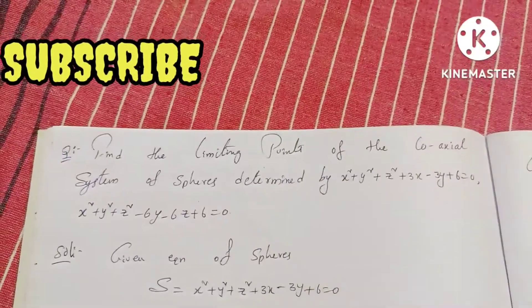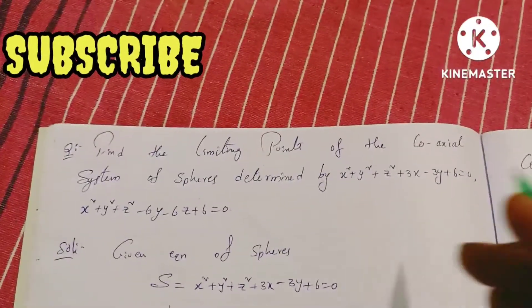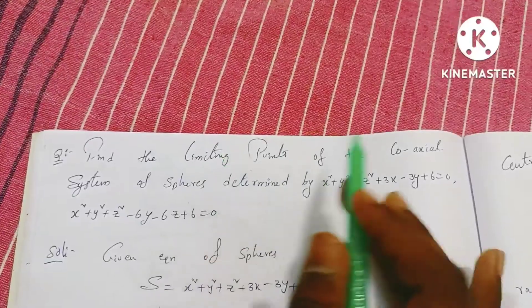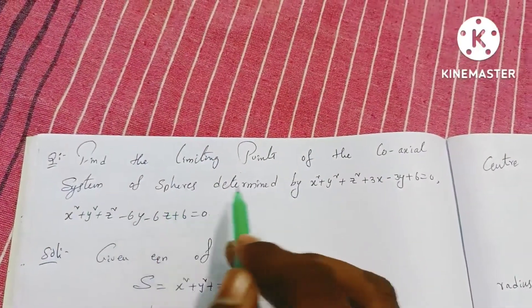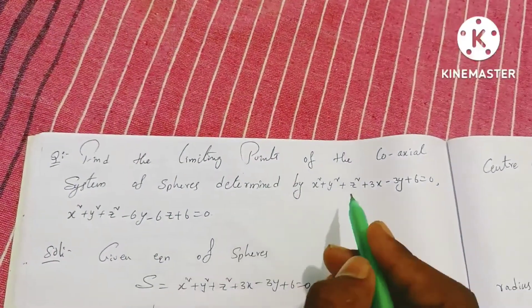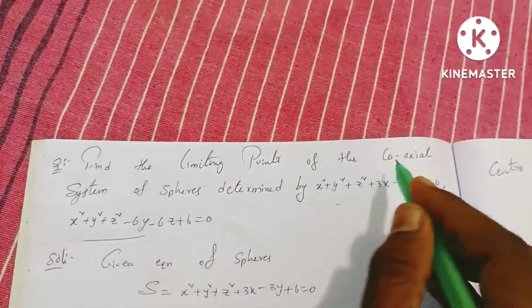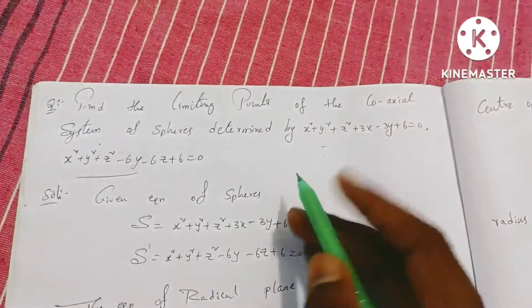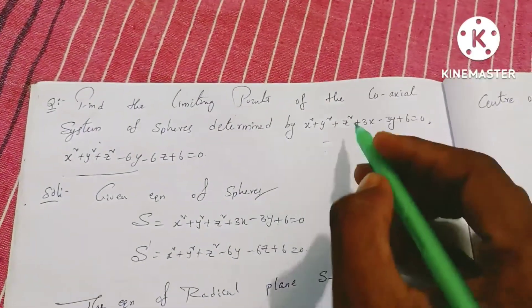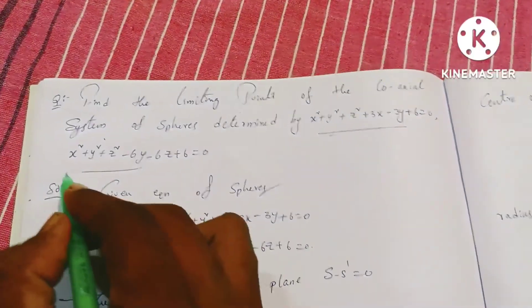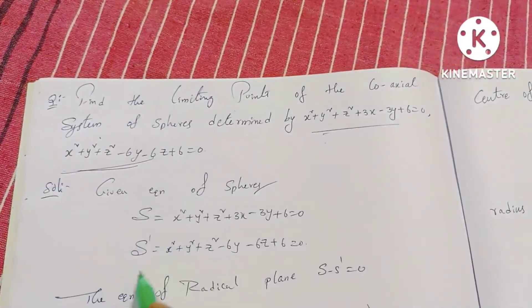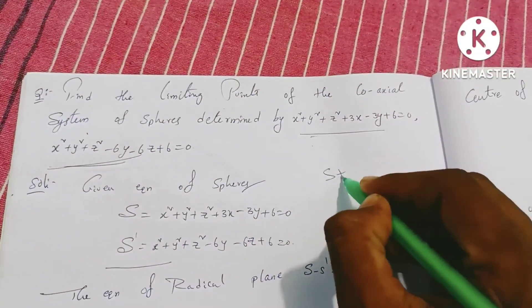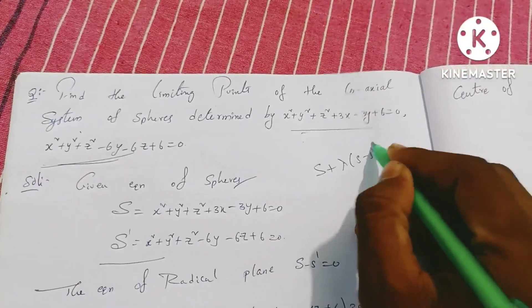In this video, we will talk about the limiting points of the coaxial system of the spheres determined by the two sphere equations. The coaxial system of the sphere has limiting points. Given the sphere, the first sphere equation is S and the second sphere equation is S'. The coaxial system formula is S plus lambda into S minus S dash equals zero.